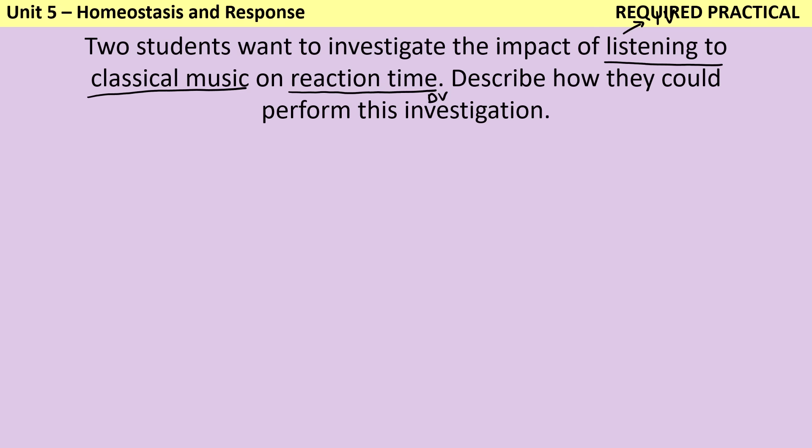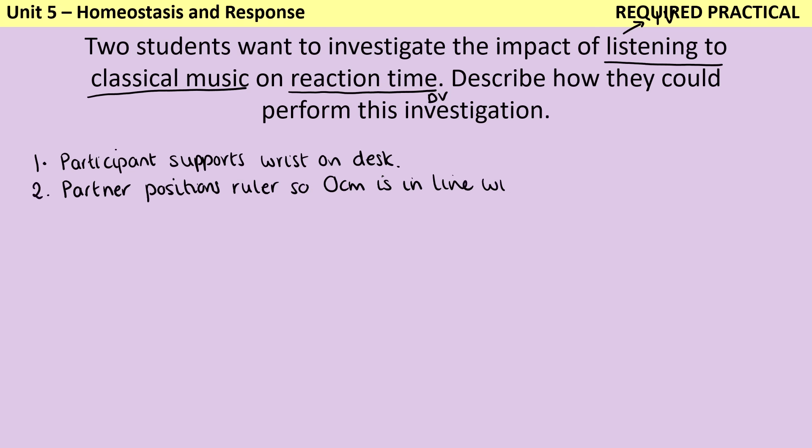This isn't an investigation that is possible to do on your own, because if you did, you would know when you were going to drop the ruler and could respond much too quickly, so you're going to need a partner. To start with, you're going to support your wrist on the desk or on a flat surface to stop your hand from moving around. Then your partner is going to take the ruler and position it so that the zero is in line with your finger and thumb. It's important they are not above or below this point — dropping from above would underestimate your reaction time, and dropping from below would overestimate it.